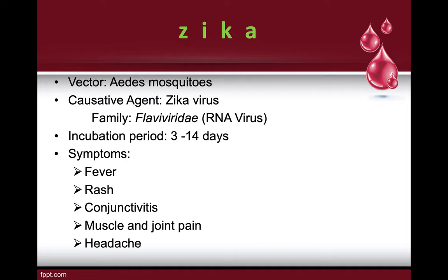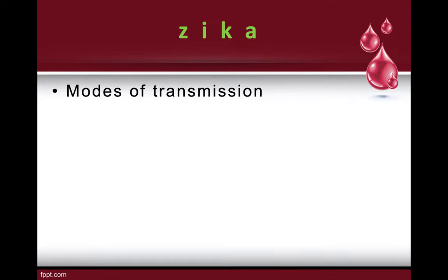The symptoms of Zika are fever, rash, conjunctivitis, muscle and joint pain, and headache. Unlike dengue hemorrhagic fever — also known as breakbone fever — where the pain is more severe and widespread, in Zika most of the pain is of muscle and joint origin.